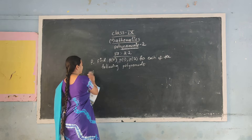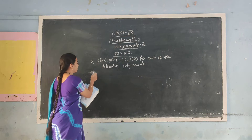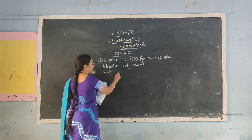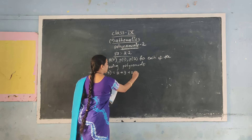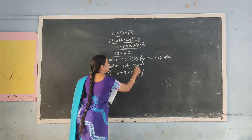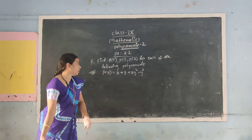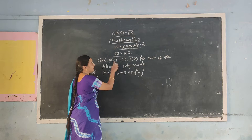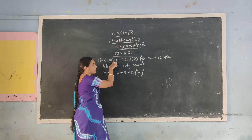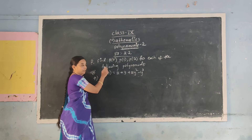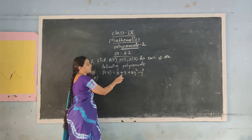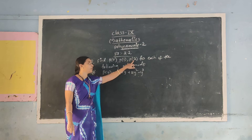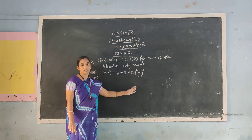There are 5 sums in this section. I have to take only one sum, that is the second sum: P(y) = 2 + y + 2y squared minus y cubed. Here 3 values of y are given. First, substitute 0 in the place of y to get the first answer. Then substitute 1 to get a second answer. Then substitute 2 in the place of y to get the third answer.